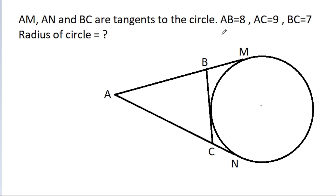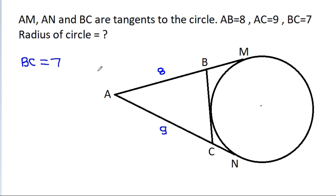In this video, we have given that AB is equal to 8, AC is equal to 9, BC is equal to 7. Then the radius of the circle is equal to what? So AB is 8, AC is 9, and BC is 7. Suppose this point is P.